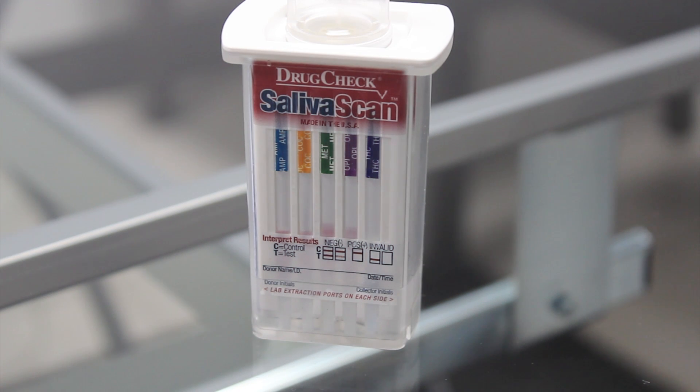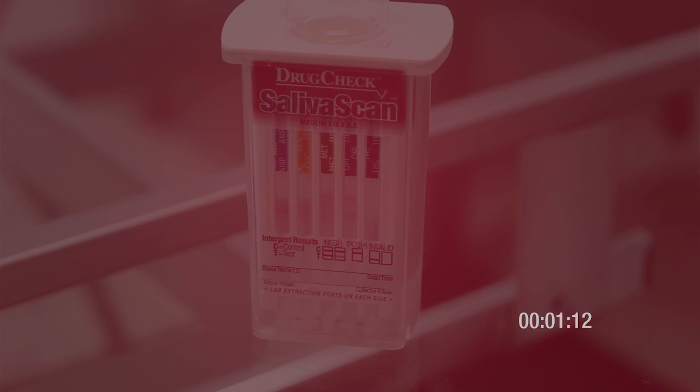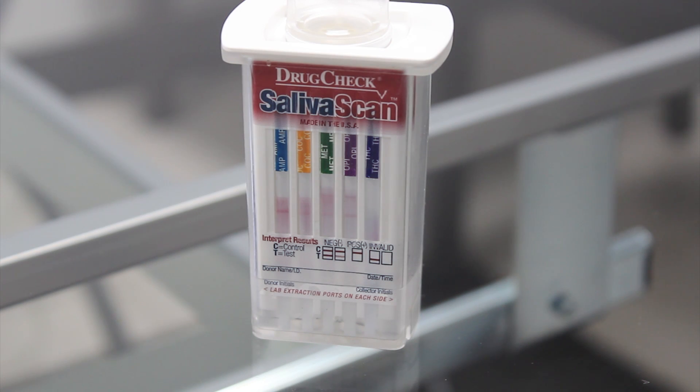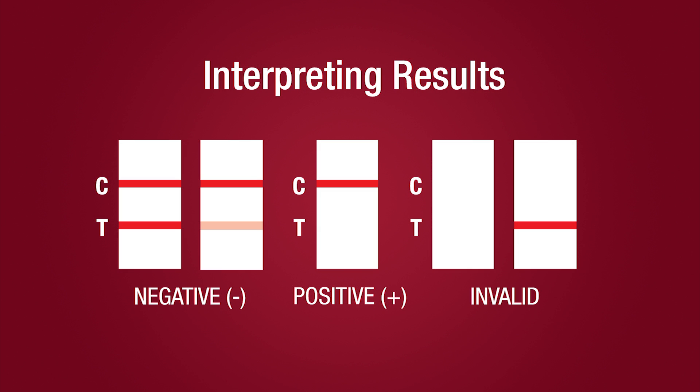Set the device upright on a flat surface and keep upright while the test is running. Wait for colored bands to appear in test results area. Allow the test to proceed undisturbed until a reddish-purple CTRL-C line appears and the test background clears. The CTRL line is the uppermost line in the test channel.